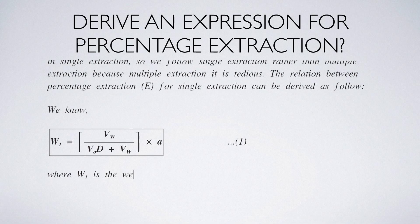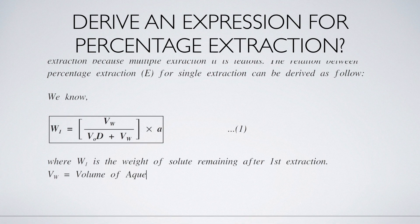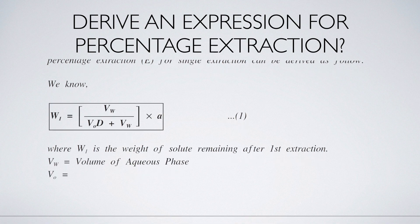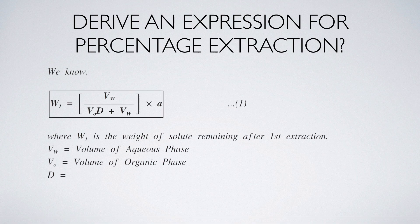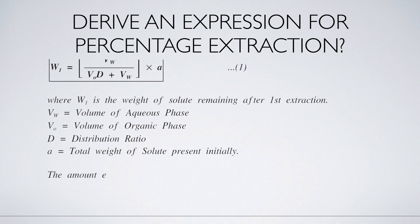Where W1 is the weight of solute remaining after first extraction, VW is volume of aqueous phase or water, VO is volume of organic phase, D is distribution ratio, A is the total weight of solute present initially. The amount extracted will be A minus W1.